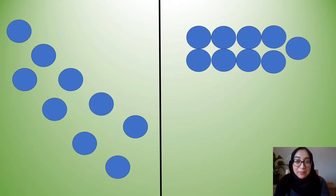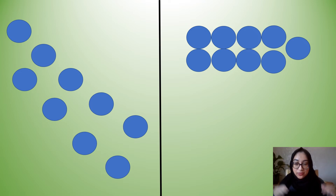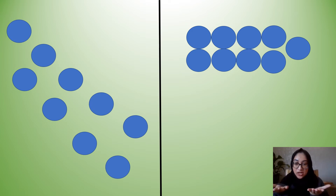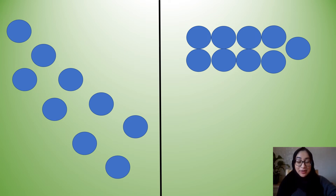You can see some blue circles on your screen now. One side has them spread out and one side has them really close together. Do you think there's the same amount of blue circles on both sides or do you think they're different? Have a think. We can double check by making sure we point and touch.